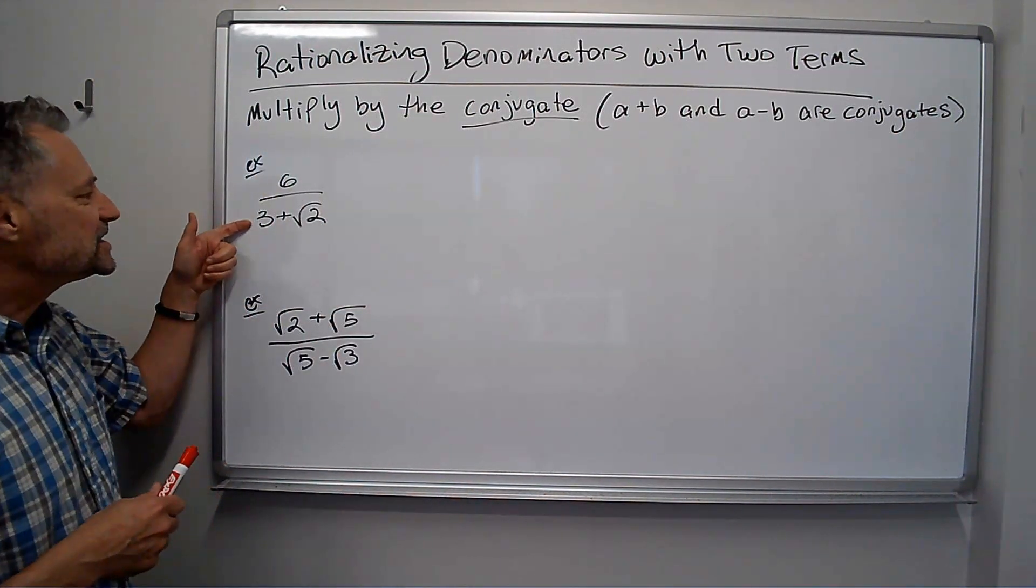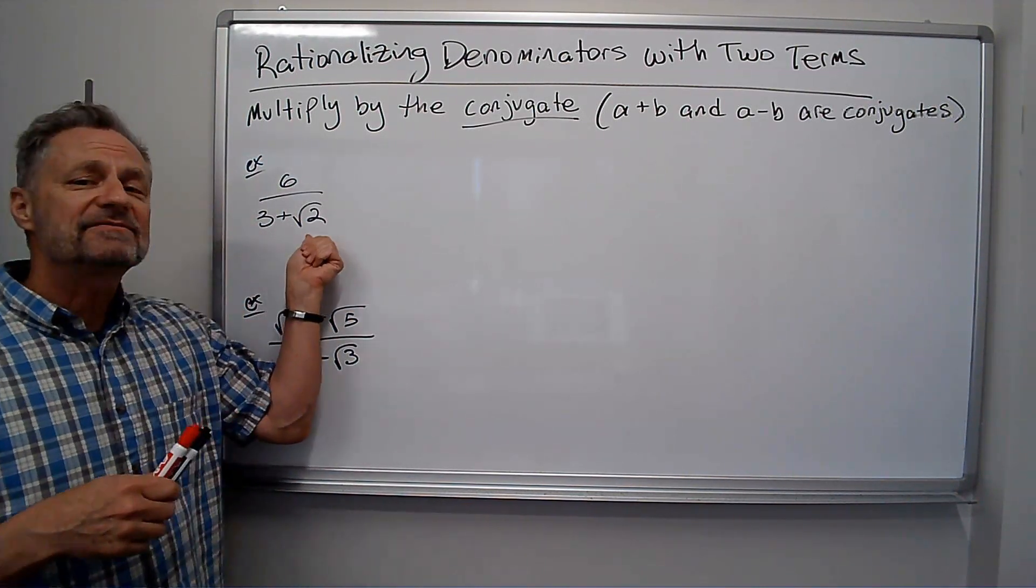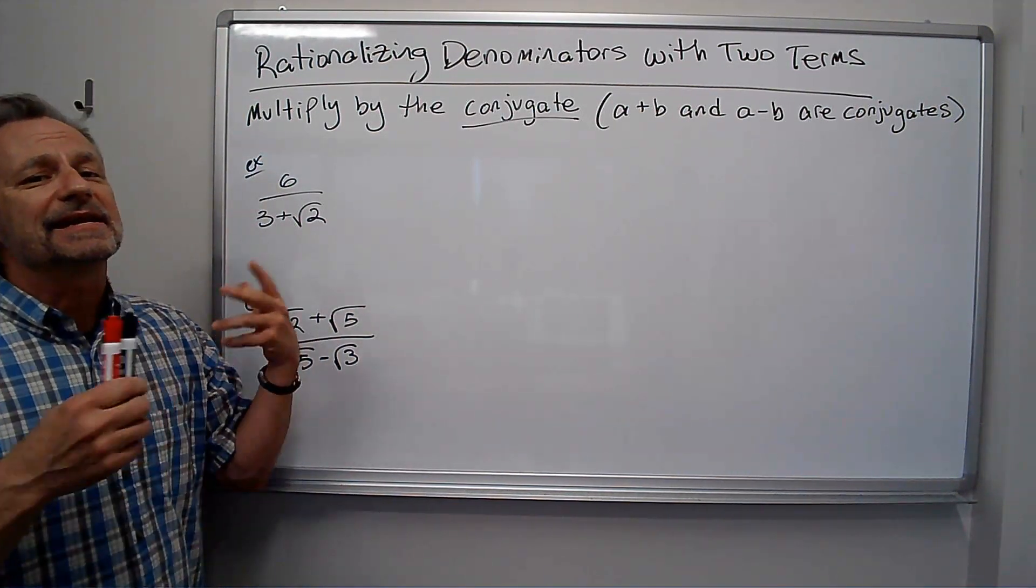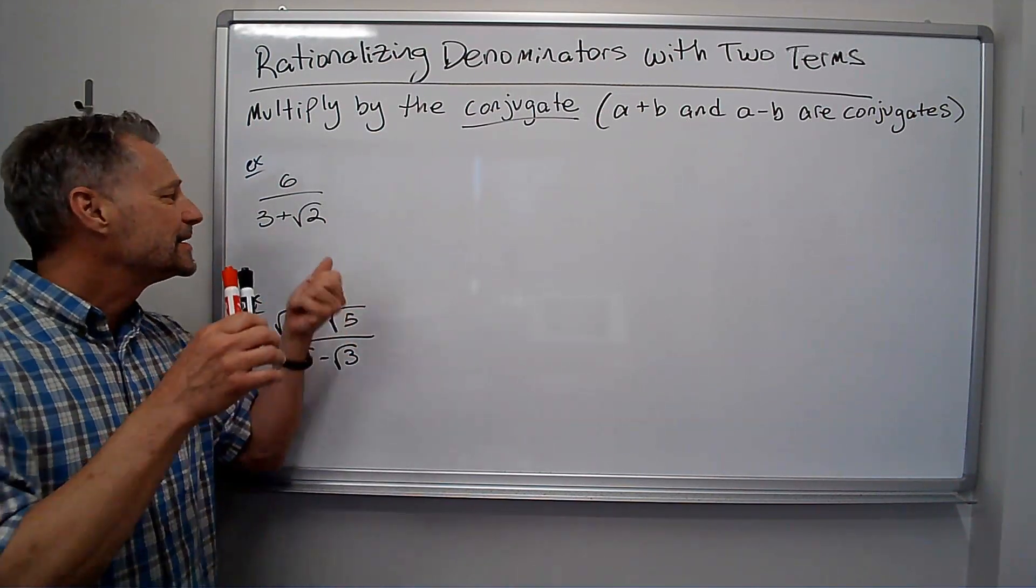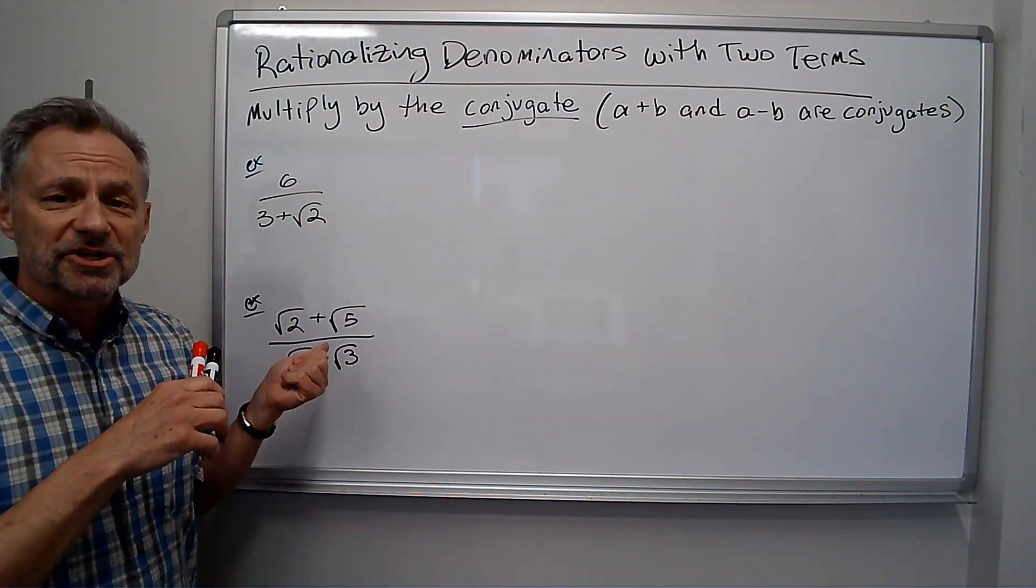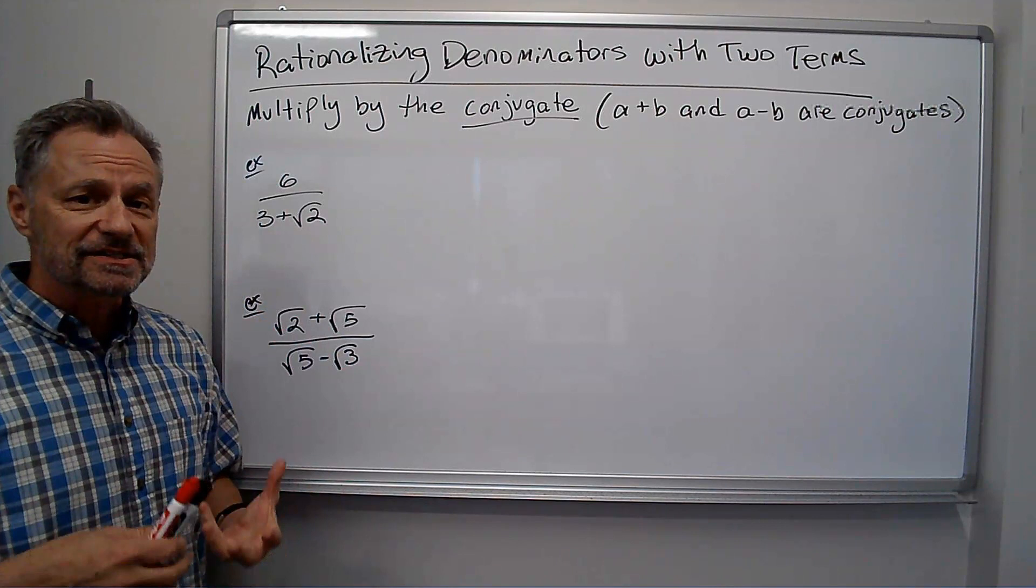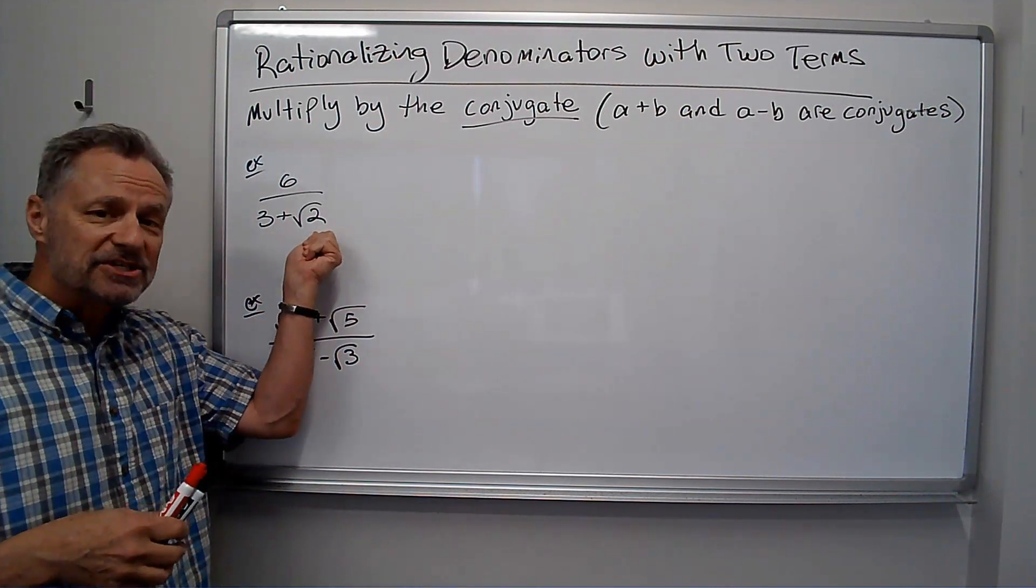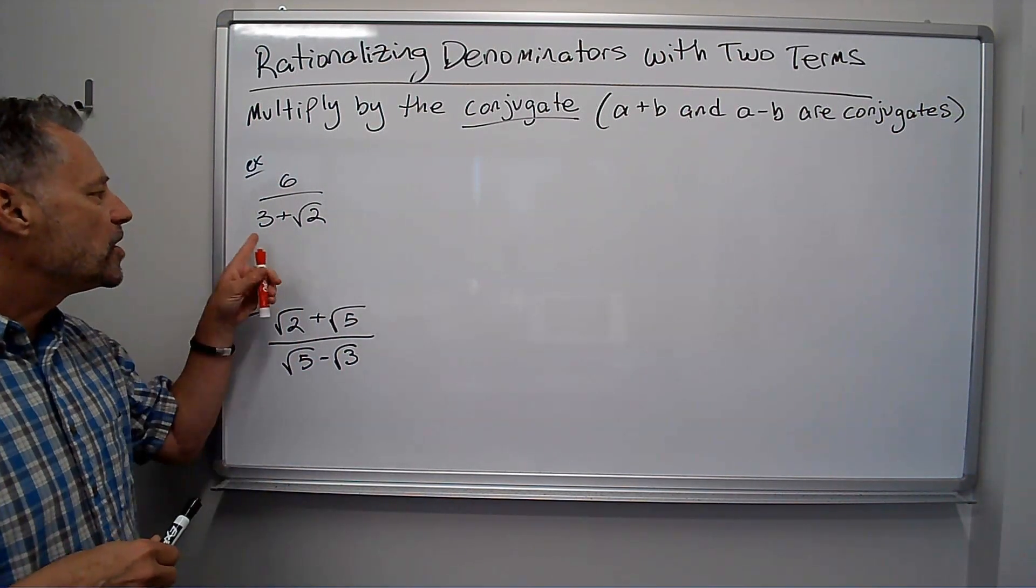I've got 6 over 3 plus the square root of 2. Remember, I can't have square roots in a denominator. That's an irrational number. They don't like to have irrational numbers in the denominator. They'll say, rationalize the denominator. Get it from an irrational number of square root of 2 to a rational number.